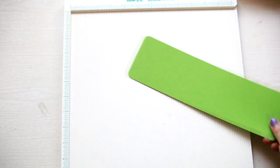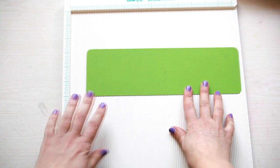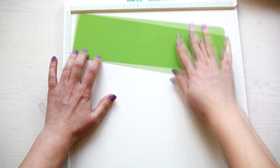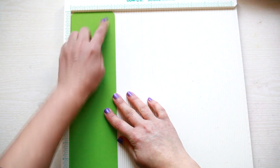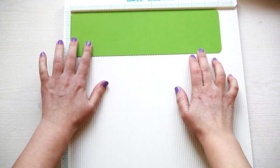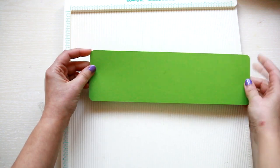First you need to trim your cardstock to 11 by 3 1/4 inches. I also rounded the corners.